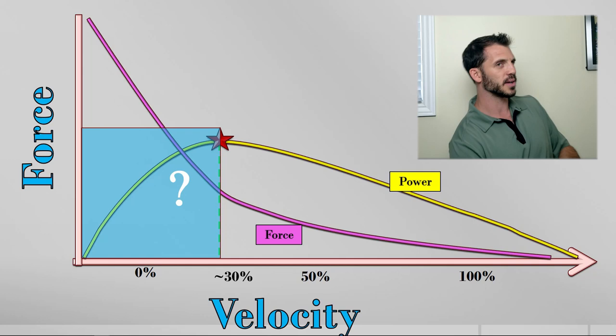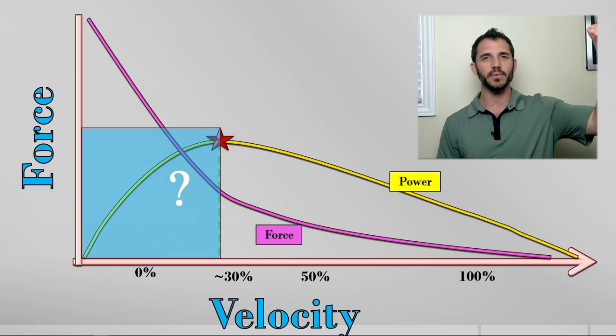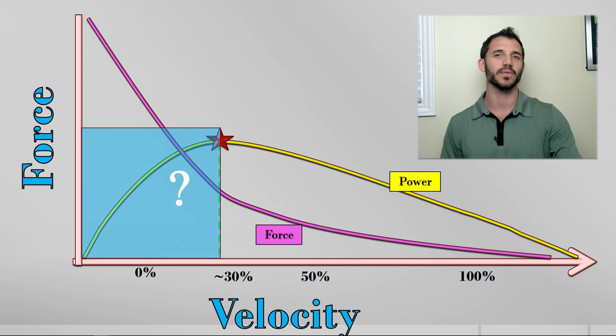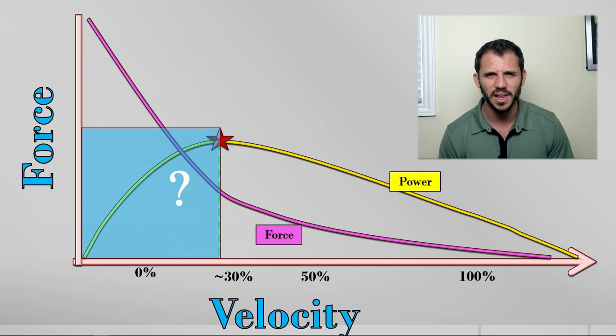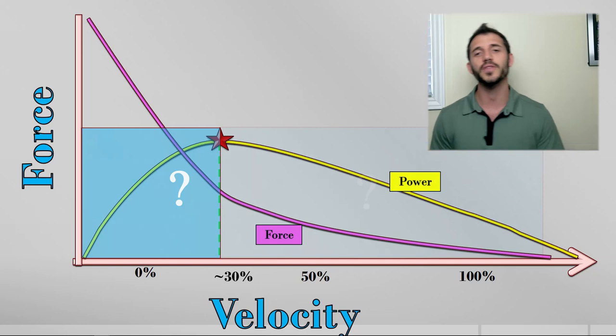Well, that answer is going to be wherever this graph, this power graph, is the highest. Because what that's going to tell you is this. Look at this part, the left or kind of right part of the curve. Well, doing something that's really, really heavy and really forceful isn't necessarily going to be the most powerful because it's going to be too heavy and it's going to make you move slow. Imagine doing a one rep max deadlift. You're going to move a lot of force and produce a lot of force in the ground, but it won't be a lot of power because it's too slow.